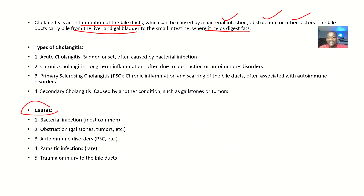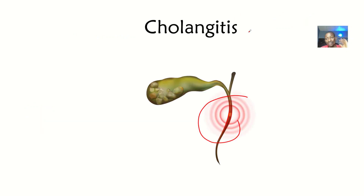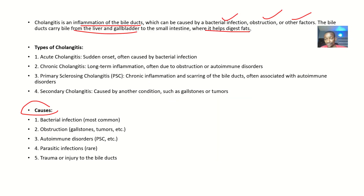This bile will help you to digest fat. So you can see where this problem is linking — right from the liver. If there's no bile, there will be a problem. Now talking about the types of cholangitis: we have acute cholangitis, which is a sudden onset — there's suddenly inflammation of the bile ducts.